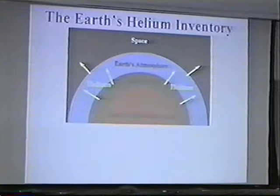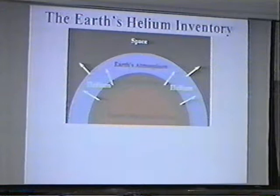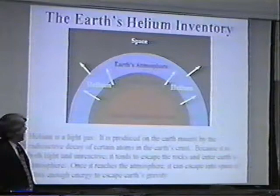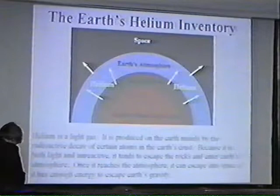There are other dating methods, and some of them are probably a little better. We can look at how much helium is in the atmosphere. Helium is a light gas produced mostly by radioactive decay in the Earth's crust. What's nice about helium is it's very unreactive — under normal conditions it simply doesn't react.